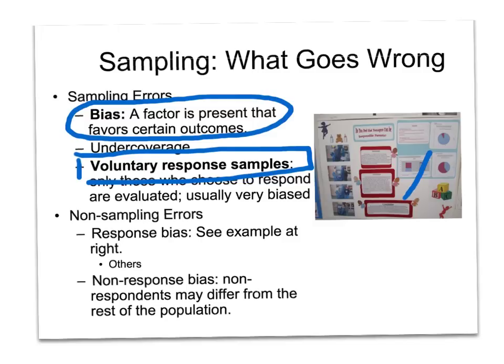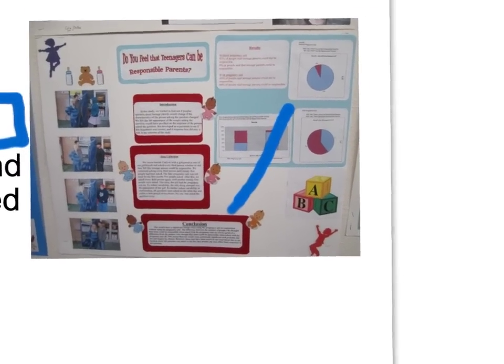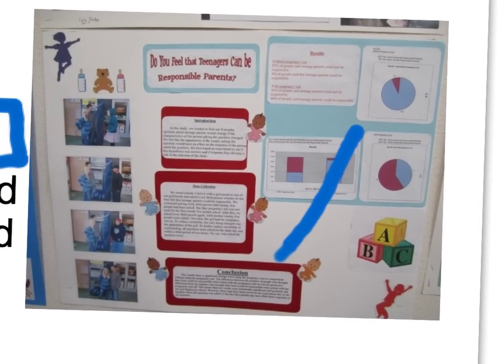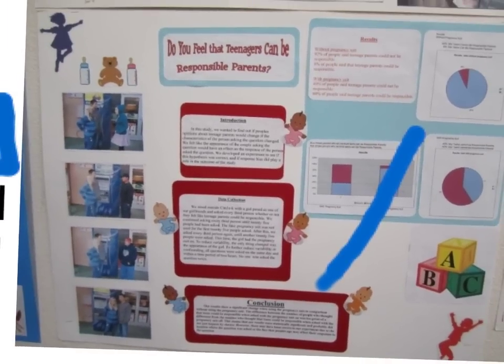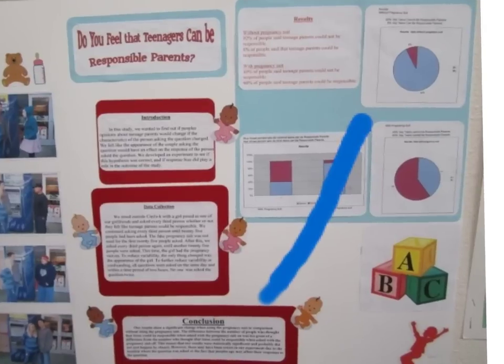Another type is response bias. This is actually a project you're going to work on in second quarter — you'll create a survey and try to influence the answers in some way, either by how you ask the question, how you dress, or by showing a picture. For example, one survey asked, 'Do you feel that teenagers can be responsible parents?' and the interviewer wore a pregnancy suit — a rubber device worn under clothes to look pregnant — when asking 25 people, and then asked 25 more people without wearing it.